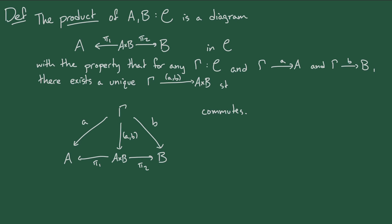What people like about this definition is that it's totally elementary — you can parse it the moment you know what a category is. But if you want to prove anything about products, or even guess whether it might be true, like that they're unique up to isomorphism or associative up to isomorphism, then you basically just have to unfold definitions and calculate. But since the selling point of category theory is that it's a good framework for organizing and analyzing mathematics, we can also use it to organize and analyze category theory itself.